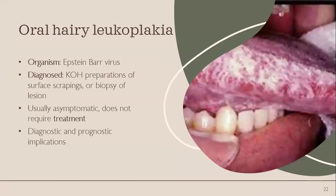Oral hairy leukoplakia is a condition almost pathognomonic of HIV infection and often indicates progression to AIDS. The lesion most frequently appears on the lateral aspect of the tongue as a thick, vertically corrugated whitish plaque. It is caused by Epstein-Barr virus and diagnosed by potassium hydroxide preparations of surface scrapings and biopsy of the lesion. It is usually asymptomatic and doesn't require treatment, but it has important diagnostic and prognostic implications.